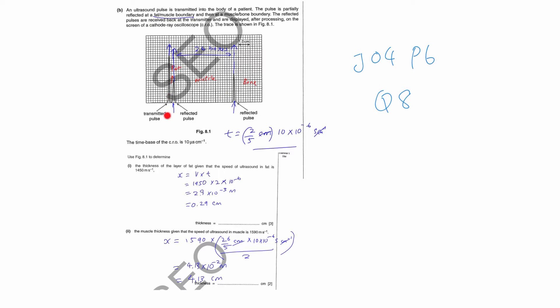Always remember: the transmitted pulse refers to the skin boundary — at the water-based gel and the skin boundary. That's called the transmitted pulse. After that, the first reflected pulse is at the fat-muscle boundary, and the second reflected pulse is at the muscle-bone boundary.